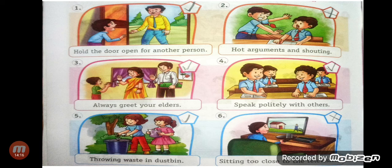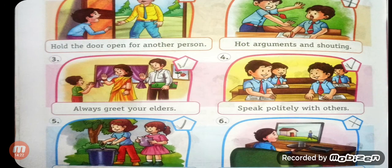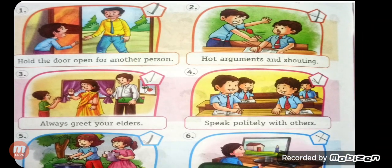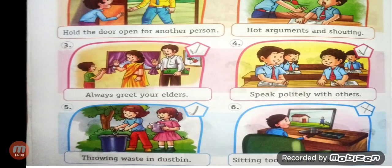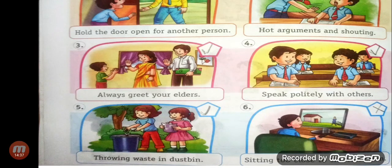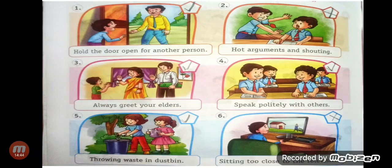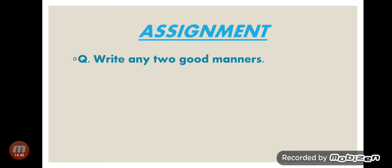Let's repeat. Hold the door open for another person — right. Hot arguments and shouting — wrong. Always greet your elders — correct. Speak politely with others — correct sign. Throwing waste in the dustbin — correct sign. Sitting too close to the television — wrong sign. Your assignment: write any two good manners. You can write 'always greet your elders,' 'speak politely with others,' or 'throwing waste in the dustbin.'